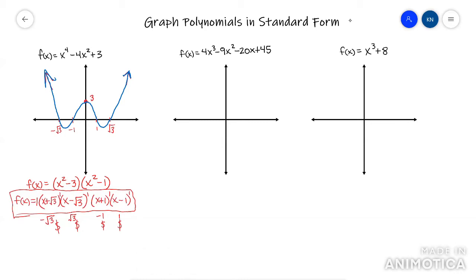Alright, let's look at this next one. This is a four term. So to factor it, you need to split it in the middle and GCF each side. So if you factor this, it's going to look like this.